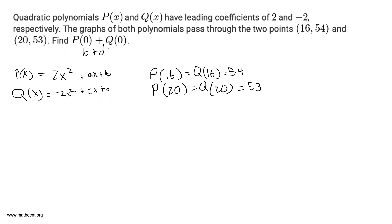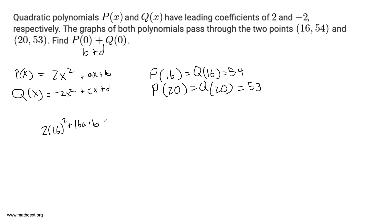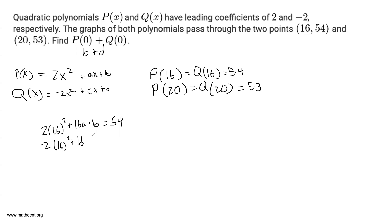We have p(16), q(16), p(20), and q(20). Let's see what happens when we plug in 16. We get p(16) = 2(16²) + 16a + b = 54. From q(x), q(16) gives us -2(16²) + 16c + d = 54.